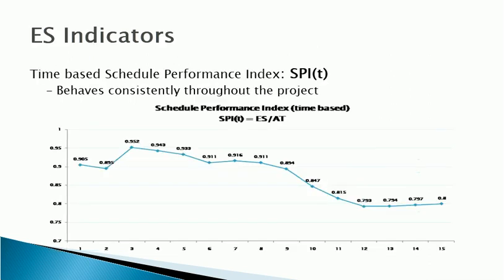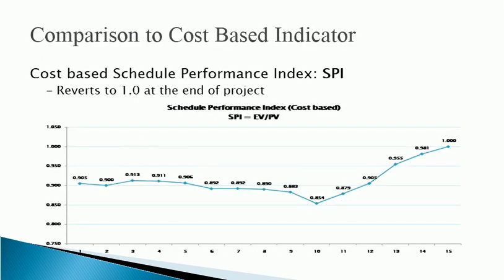Similarly, time-based schedule performance index SPIT behaves consistently through the project, ending at 0.8, indicating 80% schedule efficiency at the end. The cost-based schedule performance index SPI concludes at 1.0 at the end of the project, implying perfect schedule performance. This again is counterintuitive for a project finishing late.